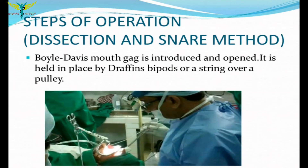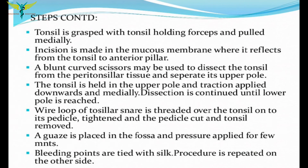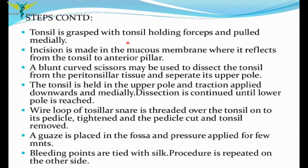The most common method is the dissection and snare method — a cold method. A mouth gag called the Boyle-Davis mouth gag is introduced into the mouth and opened, then held in place by Draffin's bipods. The tonsil is then grasped with a tonsil-holding forceps and pulled medially, and an incision is made into the mucous membrane from the tonsil to the anterior pillar.